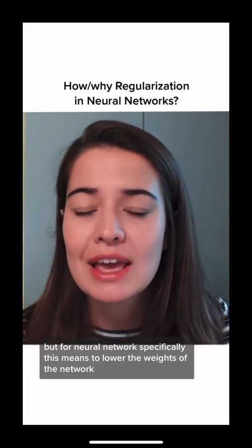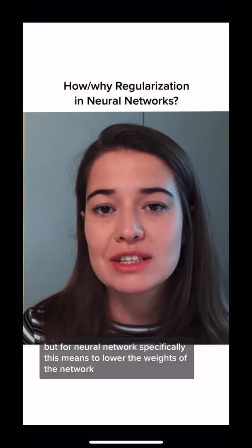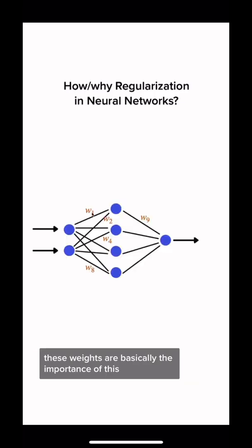But for neural networks specifically, this means to lower the weights of the network. These weights are basically the importance of the output of a certain neuron. So if it's right after the input layer, it means the importance of this input. If it's in between the hidden layers, it means the importance of the output of this neuron.